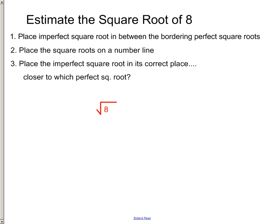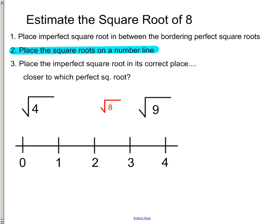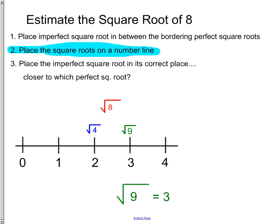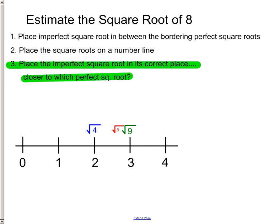Estimate the square root of 8. So, find the perfect square root. Square root of 4. Square root of 9. Put them on a number line. So, the square root of 4 is 2. The square root of 9 is 3. Then we place the imperfect square root in its correct place. It's closer to the square root of 9.